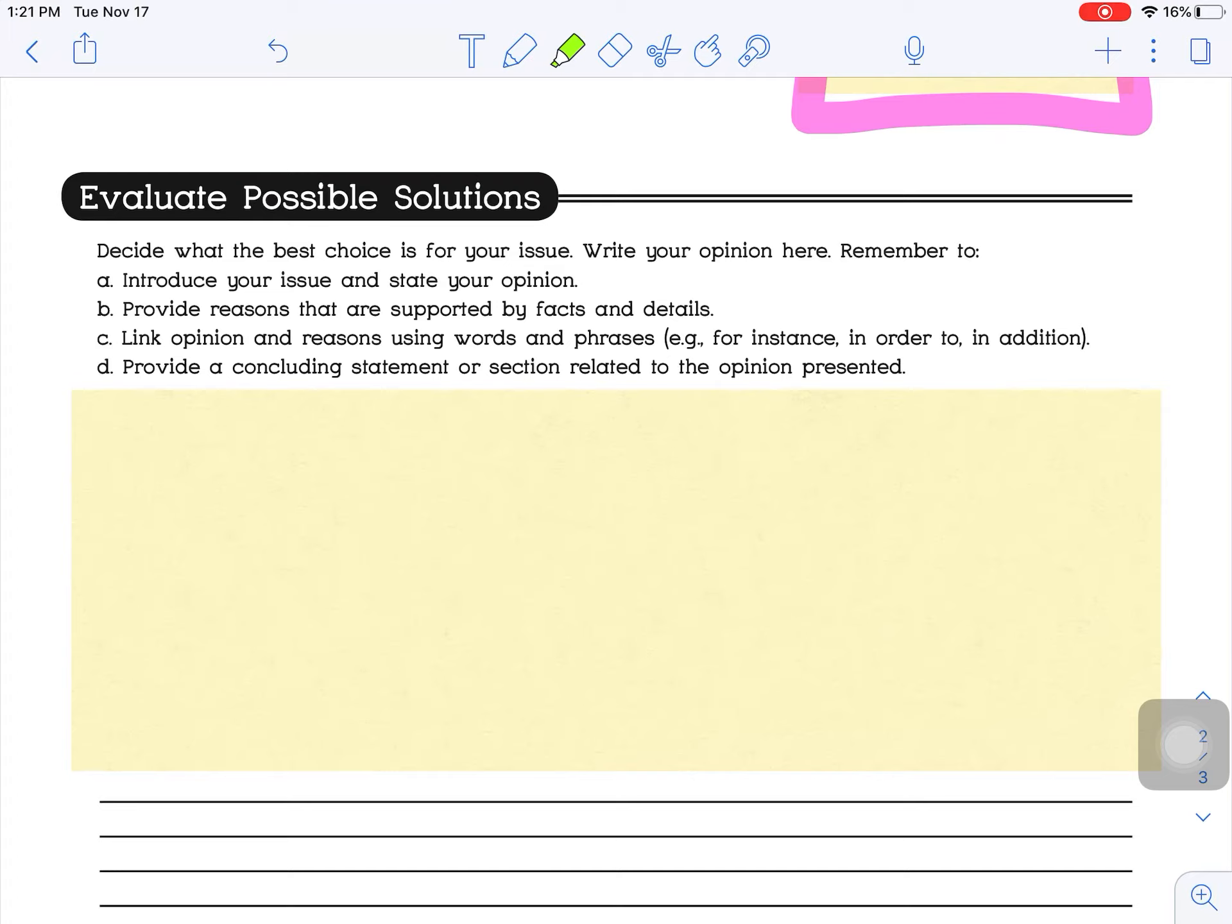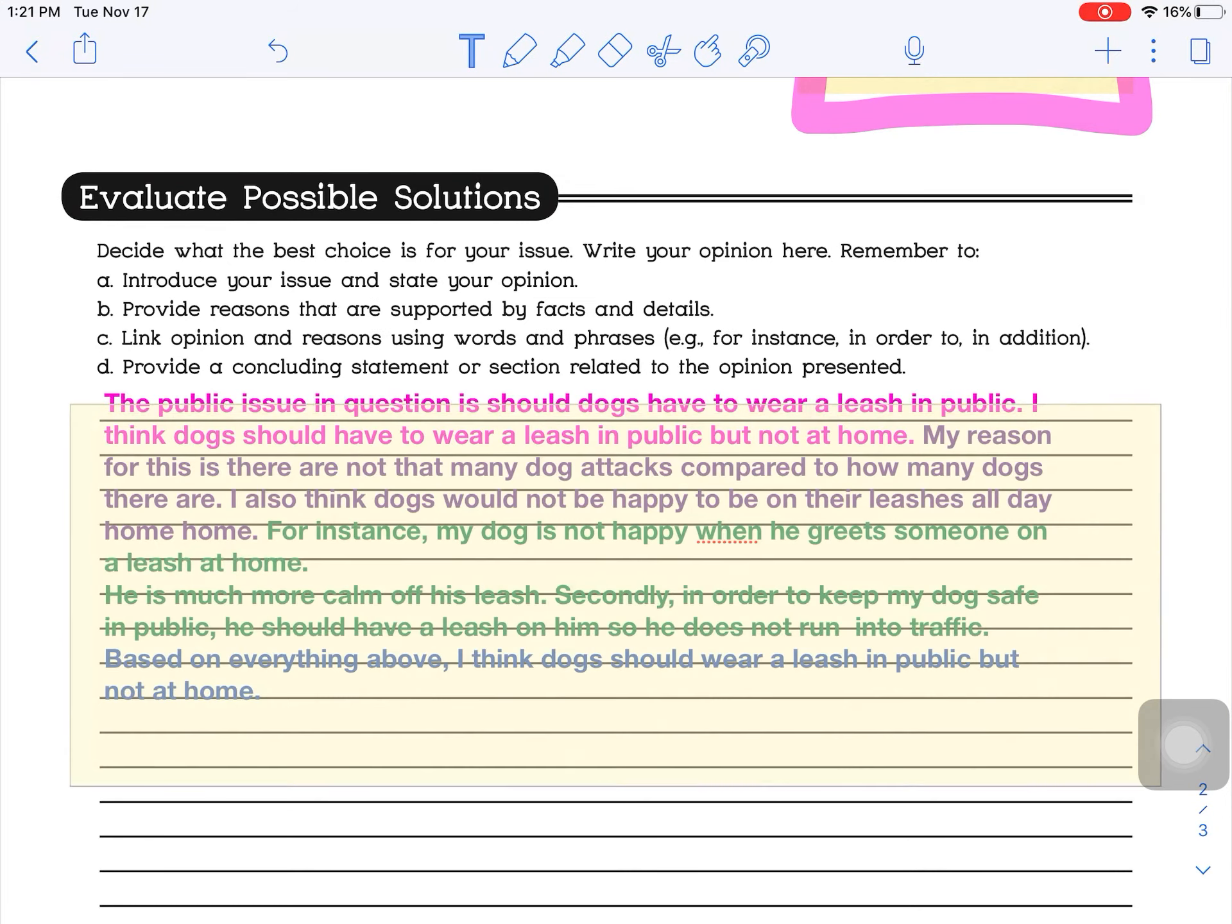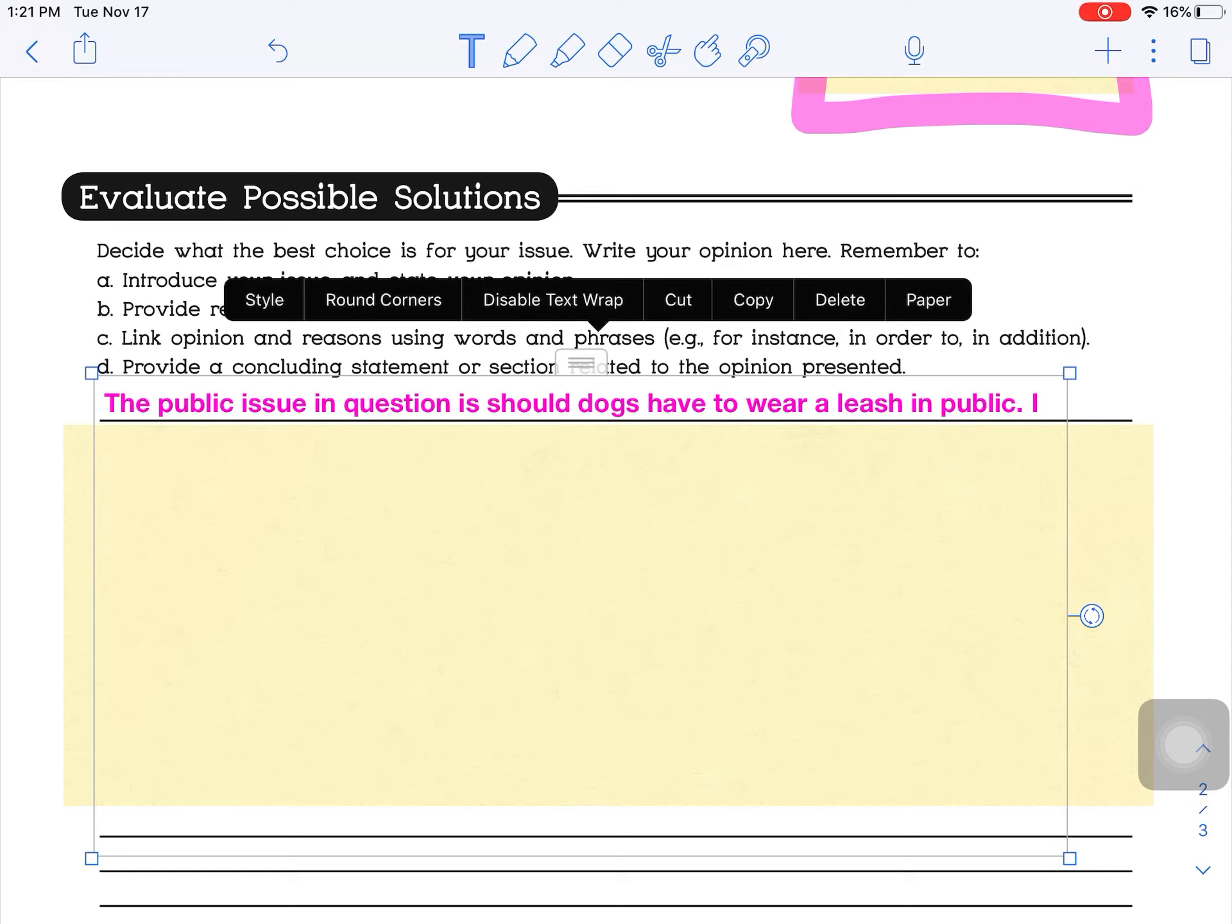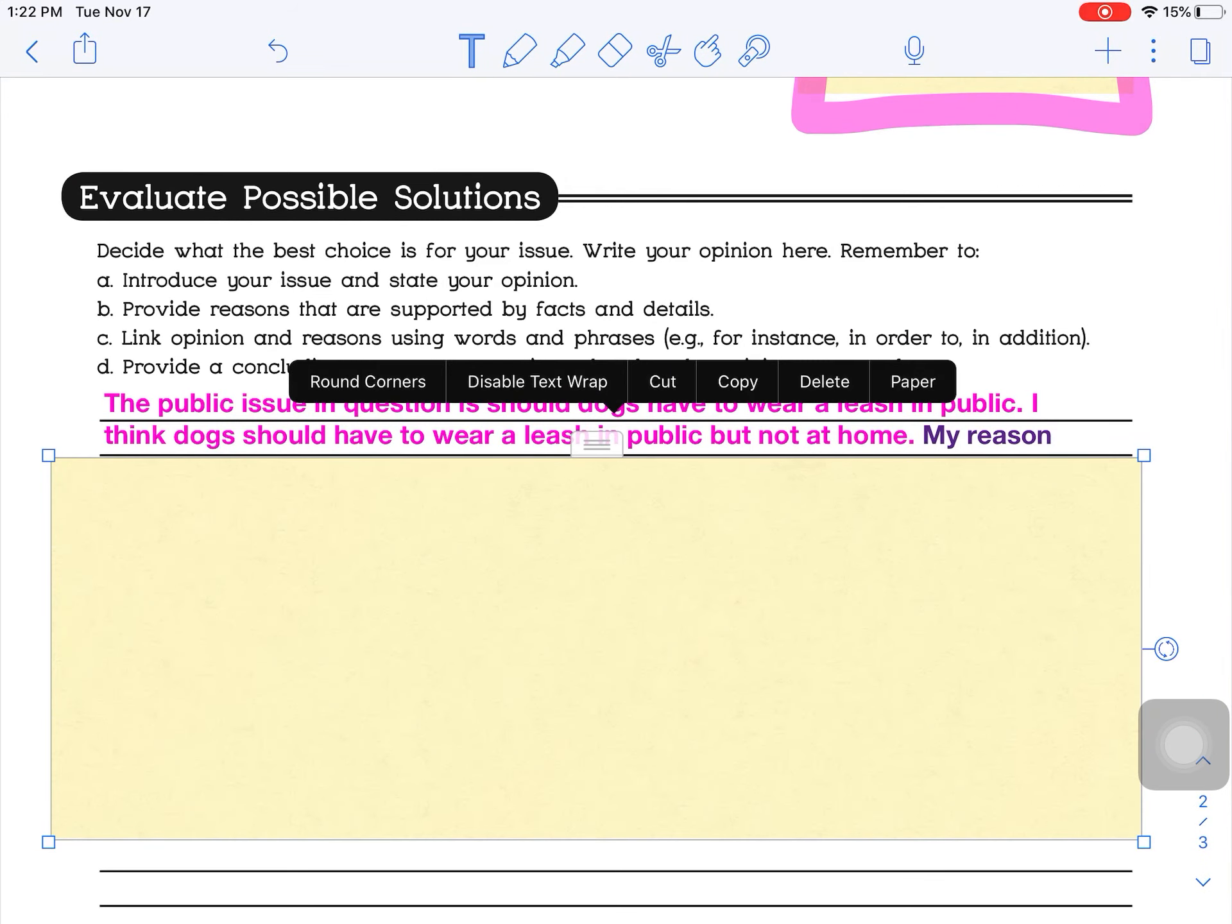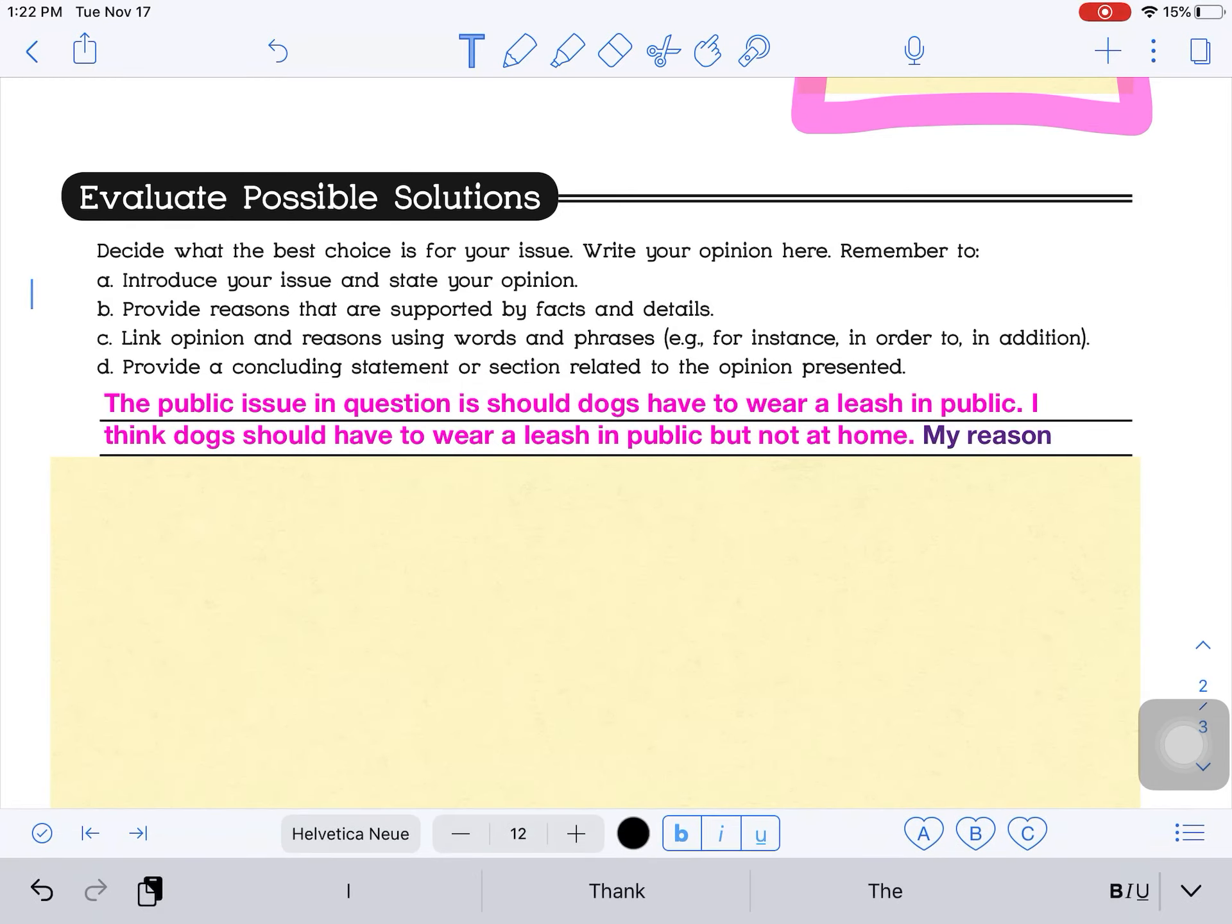So I'm going to start and follow step by step. So A, introduce the issue and state your opinion. Do you remember what the issue is? So my issue is, the public issue in question is should dogs have to wear a leash in public? That is my issue that I'm talking about right now. It also says that I should state my opinion, which I just told you what my opinion was. I think dogs should have to wear a leash in public, but not at home. So that is A. If I were to come up here, I could take my pencil, and I have finished A. So I can cross off A.